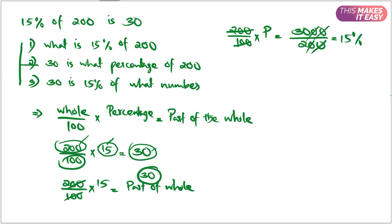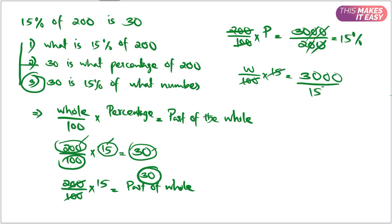Now let's look at the third question: 30 is 15% of what number? Here we know the part of the world and the percentage, but we don't know the world. So: world divided by 100, into 15, equals 30. Taking this 100 and 15 by cross multiplication, the world is 200. The theory is that if we know any two of the three — world, percentage, and part of the world — we can easily get the third one by putting those numbers into the equation and using cross multiplication.